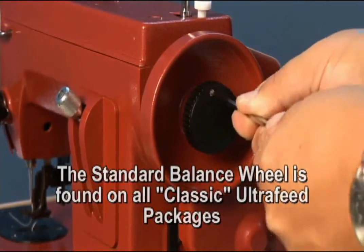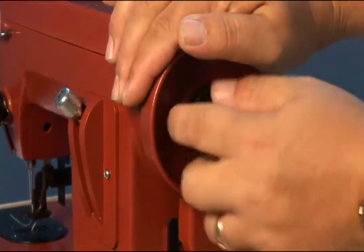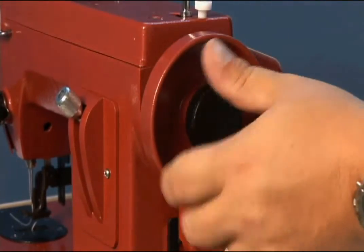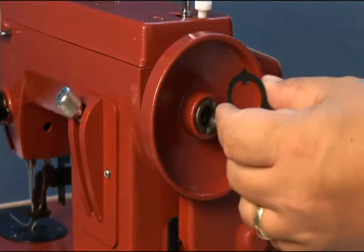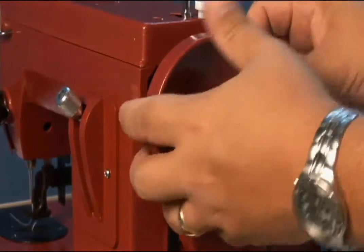First remove the screw that's in the clutch knob. Unscrew the clutch knob and set it aside. There's a clutch washer underneath. Set that aside as well.